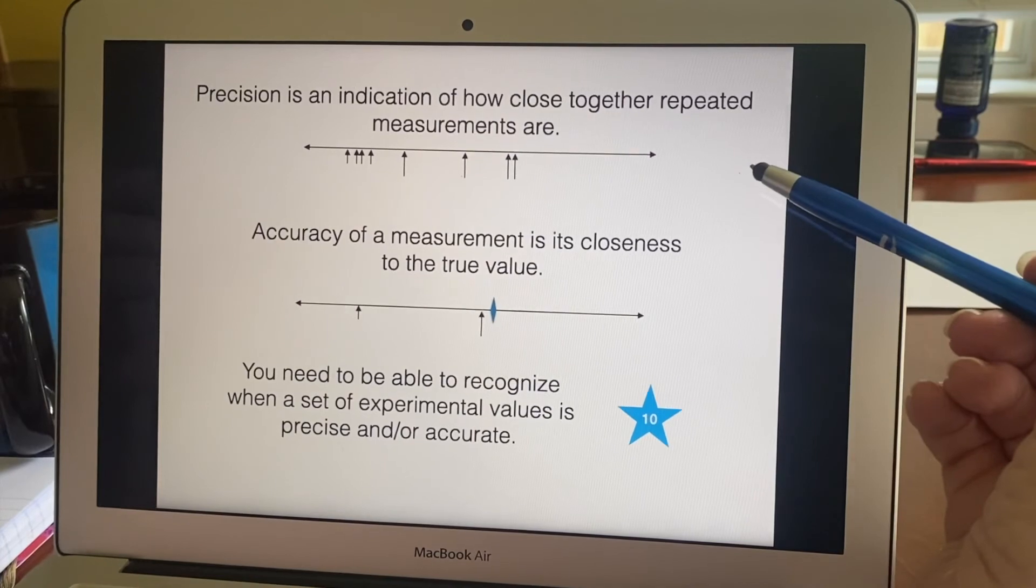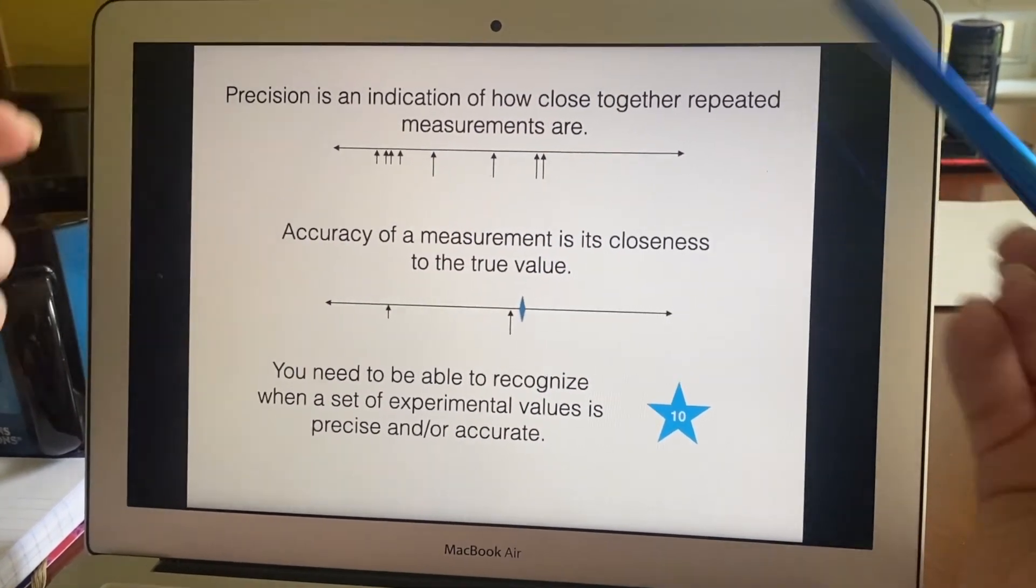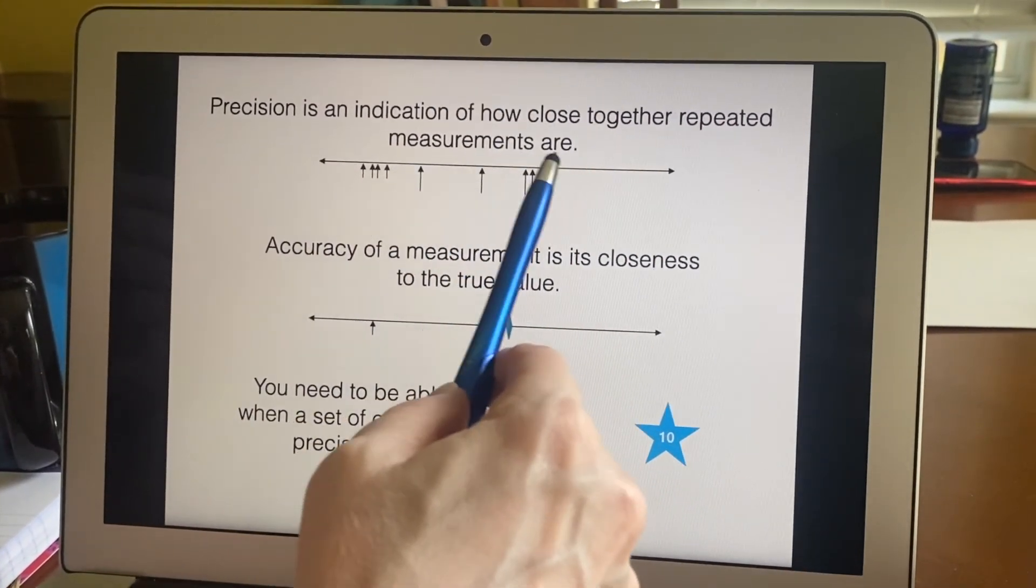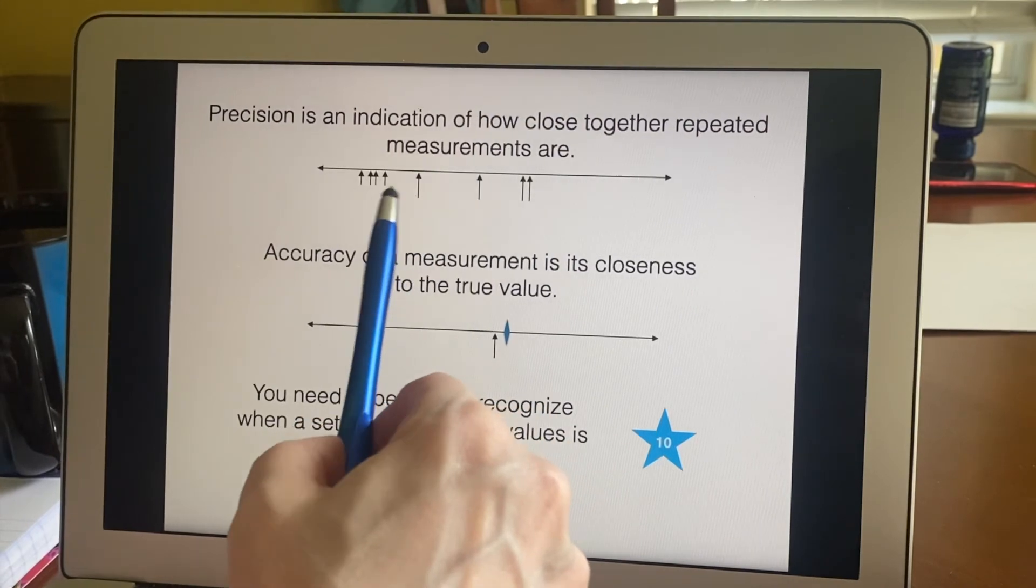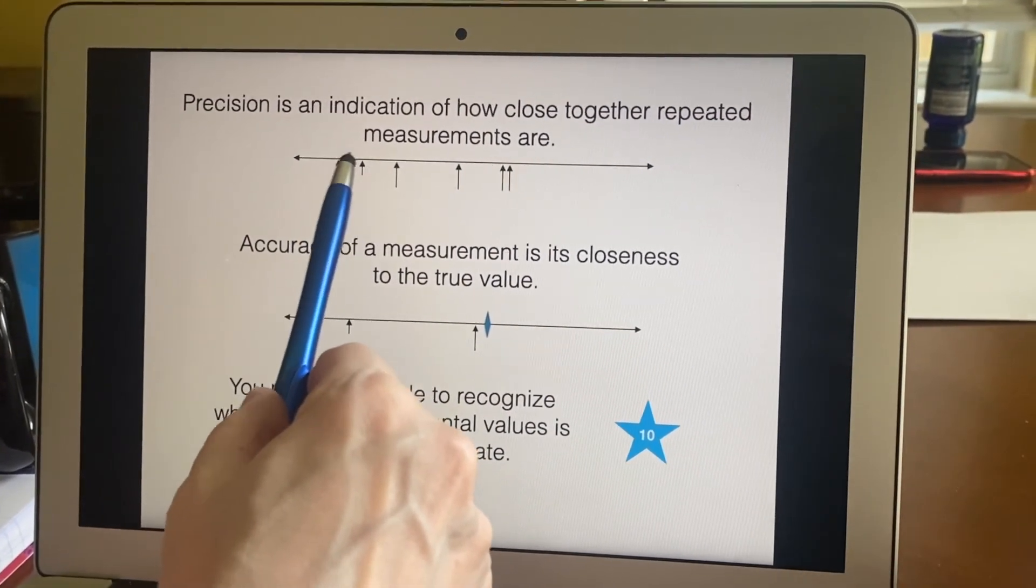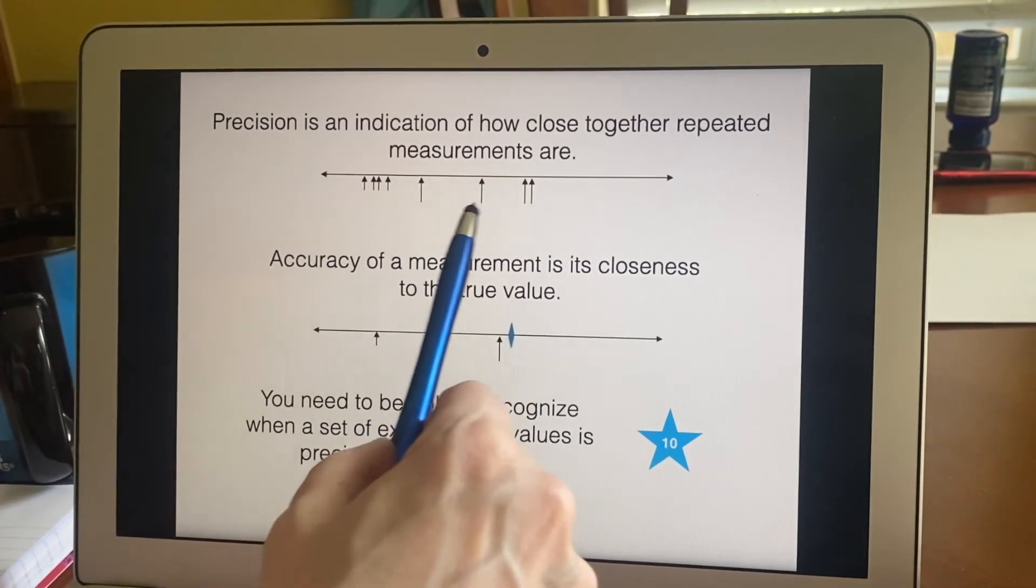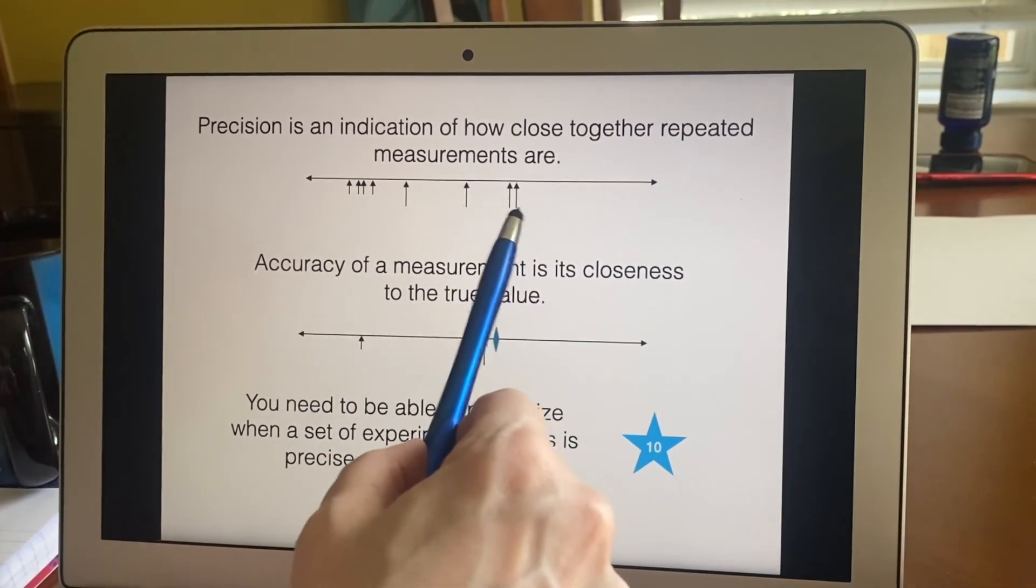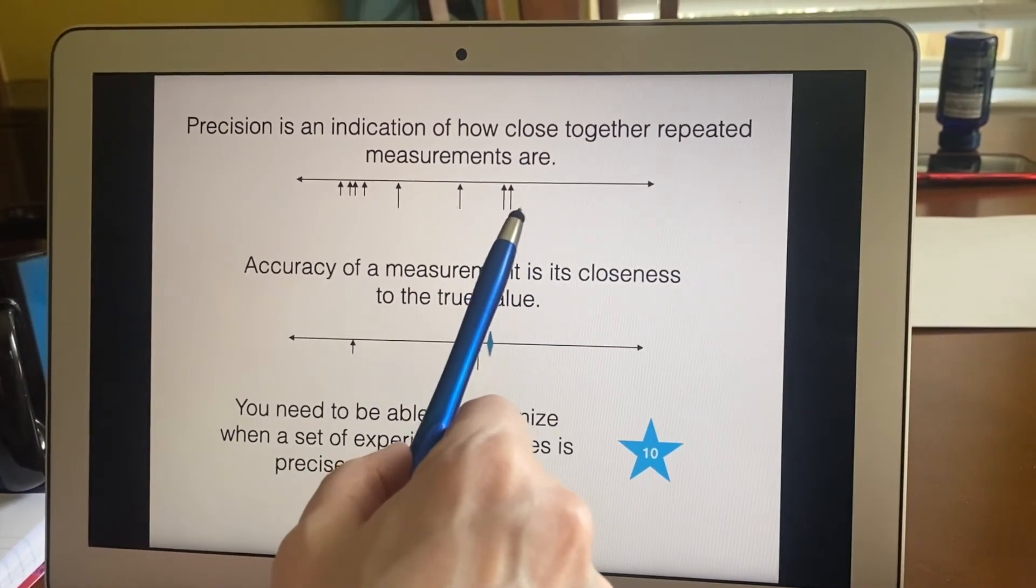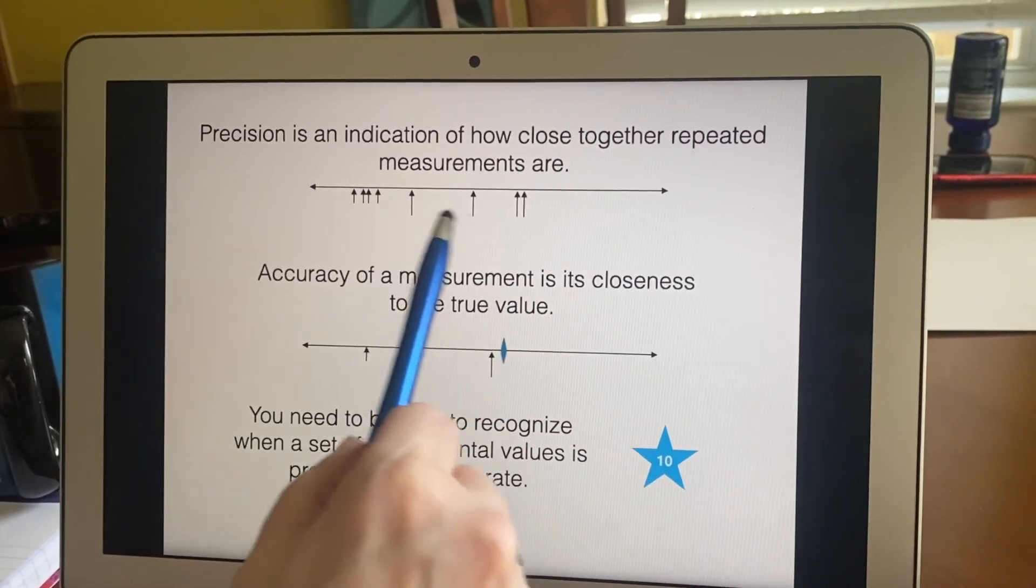So precision then, how close together repeated measurements are. Oh, that's very much like the dartboard, right? So these are very close together. If this was a group of measurements, you would say, oh, that's quite precise. I like that. This set was another one. The longer arrows. You'd say, well, that's not very precise. These are not close together. These two are, but the others are quite far from it. So this is not very precise.